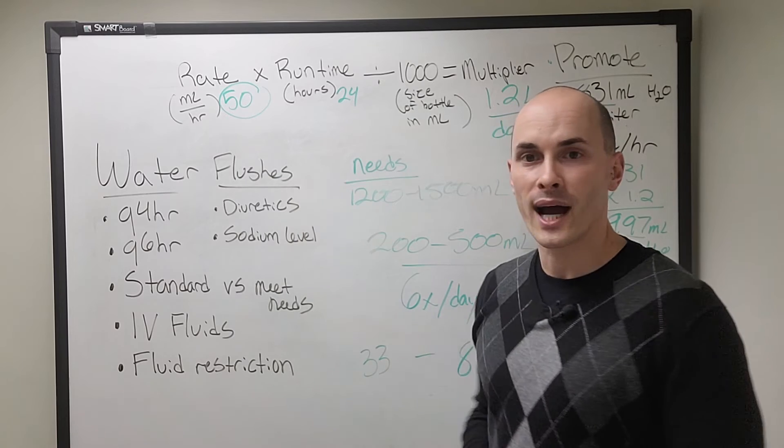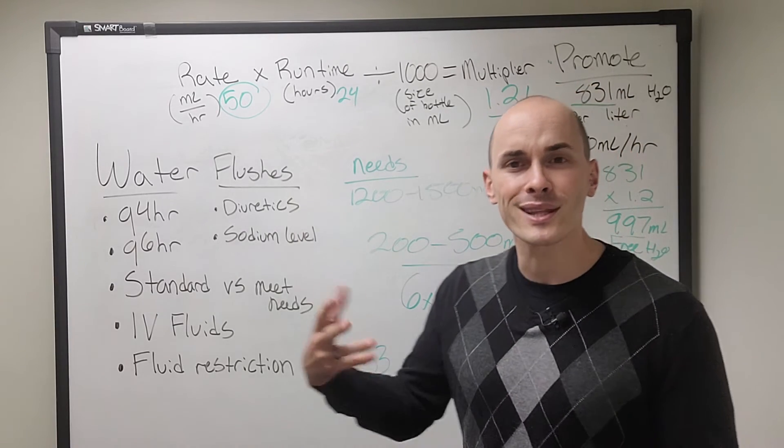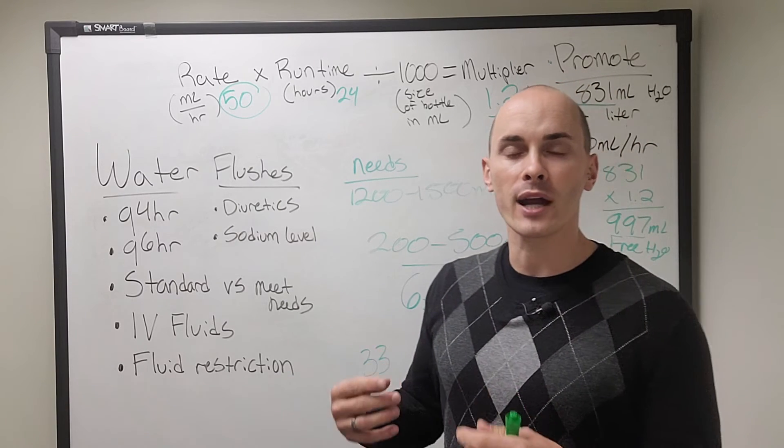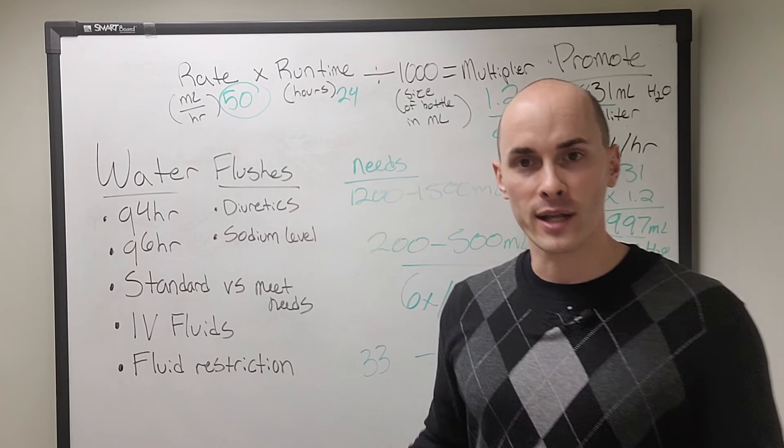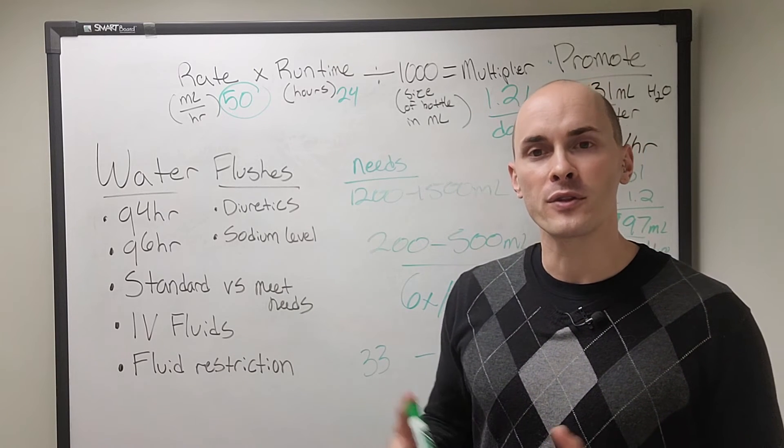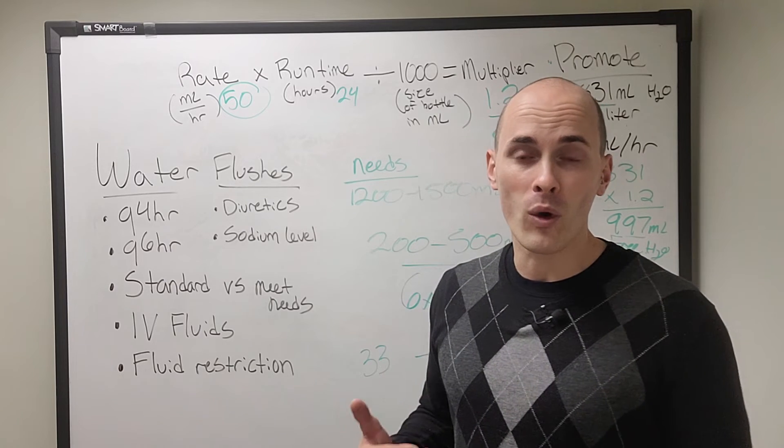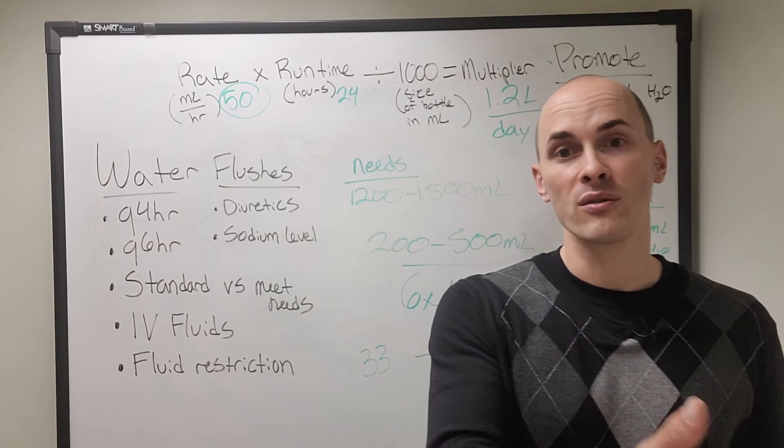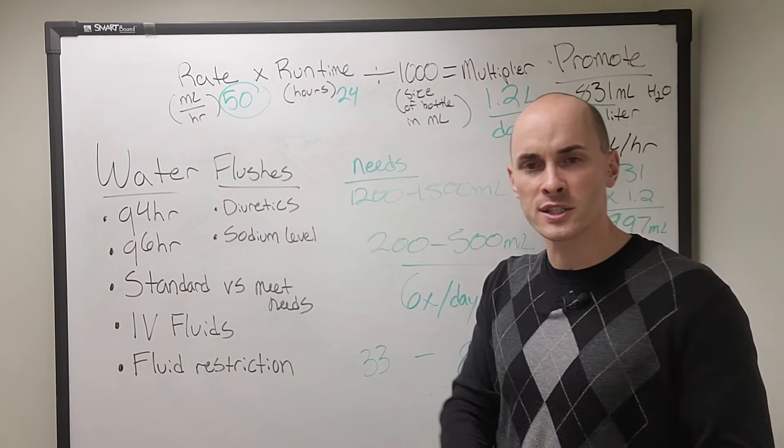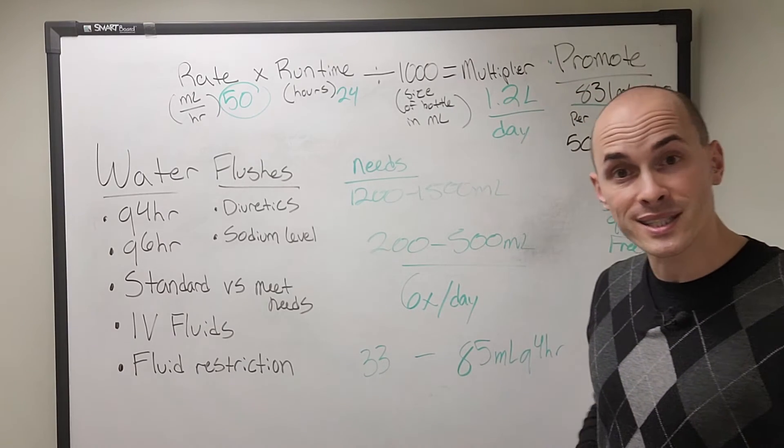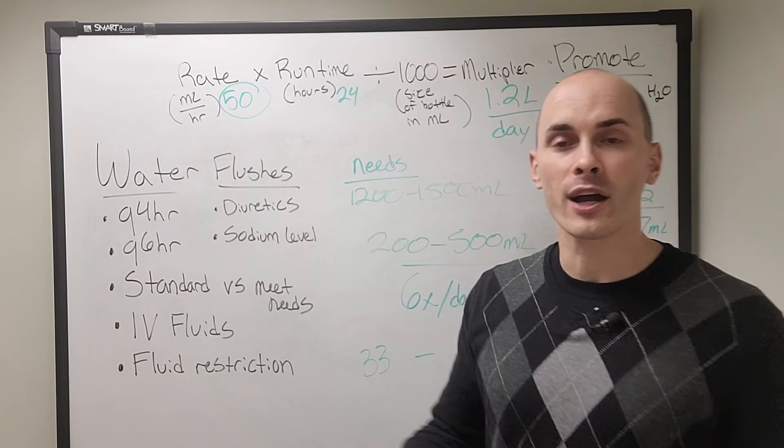Are they on any diuretics? So look through their note. Do they have furosemide? Do they have Lasix? Are they on a diuretic? A diuretic causes people to pee. They have too much fluid on board. They're getting a diuretic. So if the doctor has prescribed your patient a diuretic, they may not want them to be getting a bunch of additional fluids as flushes. They need some fluids, but maybe we'll just stick to the 60 instead of going higher than that if they're on a diuretic.